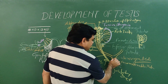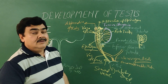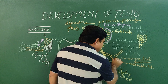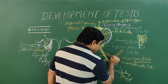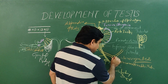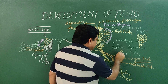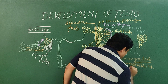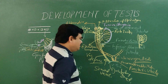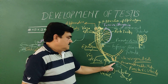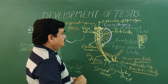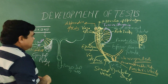The utero-vaginal canal in females forms the uterus and upper part of the vagina. In males, it forms the prostatic utricle. Here, the prostatic utricle is formed in the prostatic part of the urethra. This completes the development of the testes. Thank you.